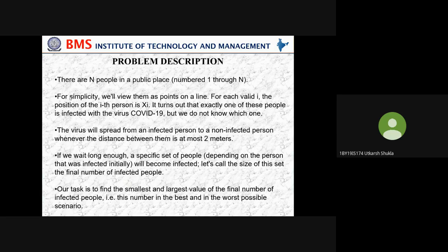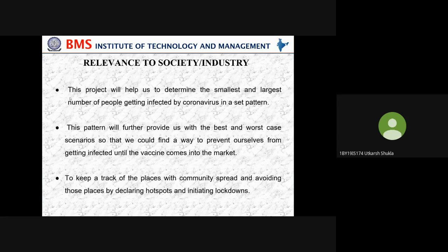If we wait long enough, a specific set of people — depending on the person that was initially infected — will become infected. We call the size of this set the final number of infected people. Our task is to find out the smallest and the largest value of the final number of infected people, that is the numbers in the best and worst case scenarios.